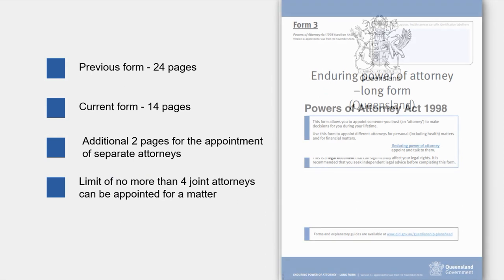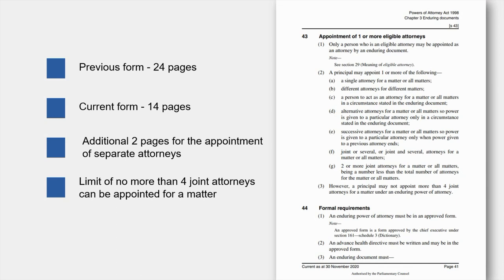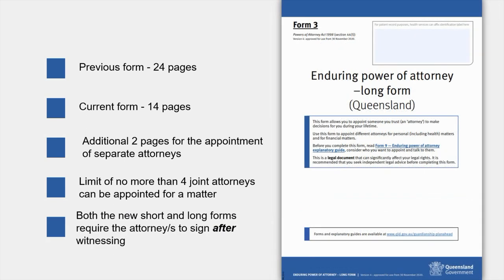There is one very important change to the Powers of Attorney Act 1998 — the limit to the number of joint attorneys that can be appointed under an EPA. Joint attorneys must agree on all decisions under the EPA. Amendments to Section 43 of the Powers of Attorney Act 1998 means a principal can only appoint a maximum of 4 people to make decisions in this way; otherwise, there is no limit on the number of attorneys that can be appointed in another manner. Finally, all approved forms, including the AHD, require the attorney or attorneys to sign their acceptance after the EPA or AHD has been completed and witnessed.